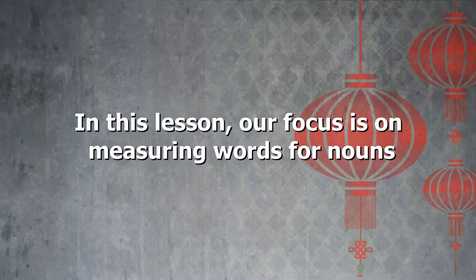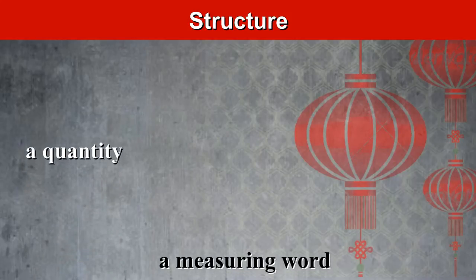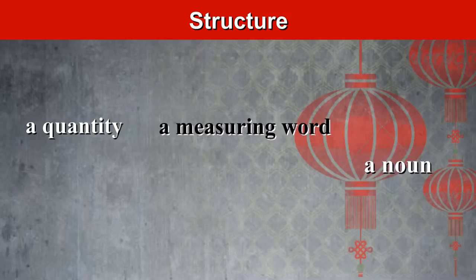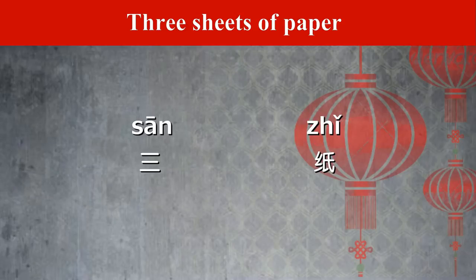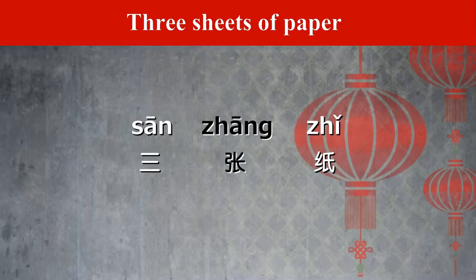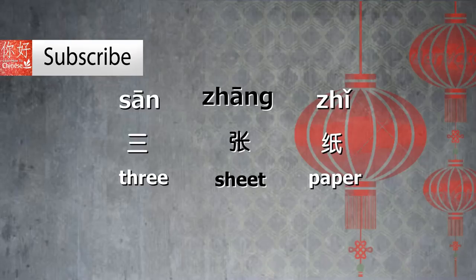In this lesson we will focus on measuring words for nouns. In Chinese, a measuring word is used in between a quantity and a noun, and this is always the case. Take 'three sheets of paper' as an example: san zhang zhi. San means three, zhang is the measuring word with a similar meaning to 'sheets' in English.